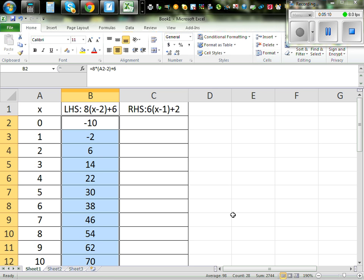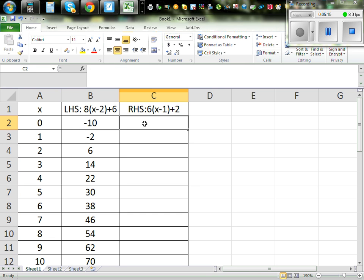So here when x is 3, y is 14. The left hand side is 14. So for right hand side you go 6 times. This is your 0 which is your x. I'm going to put a bracket. I'm going to put a bracket here. Bracket. That is a2 minus 1 plus 2. Enter. And catch the tail and drag down.